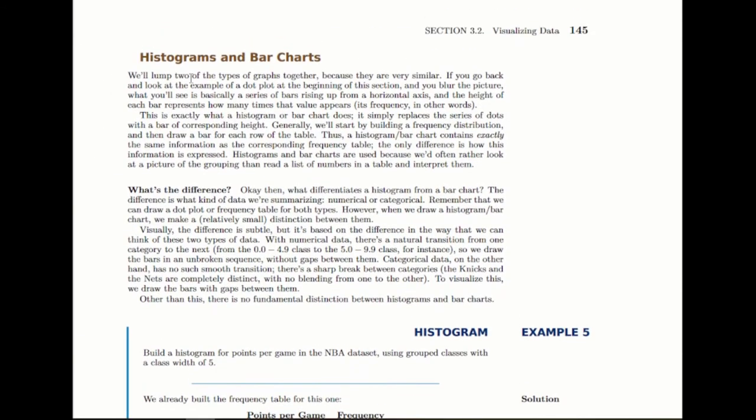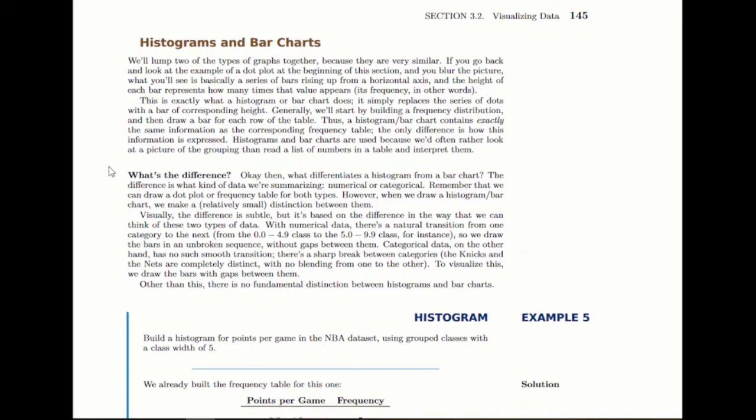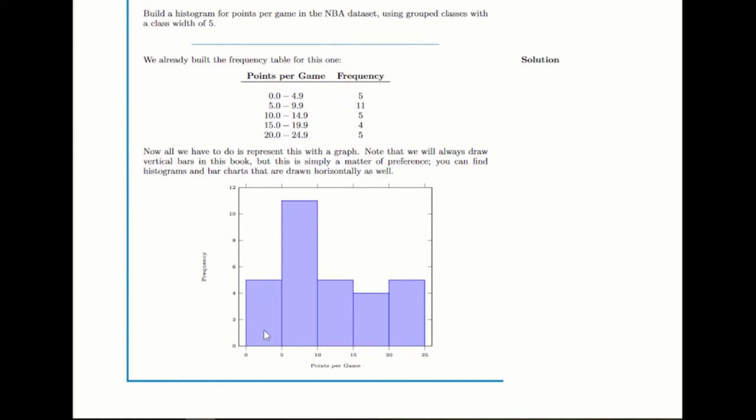Then we have histograms and bar charts, which are more or less the same thing. The histogram is for numerical data, the bar chart is for categorical data. Histograms or bar charts do the exact same thing that frequency tables do. They just count frequency, count how often something happens. It's just a visual difference. A histogram is basically like if you take a dot plot and you melt the dots together into a bar. Before we would have drawn dots going up to five, here we draw a bar going up to five for that first category. The core concept is the same.